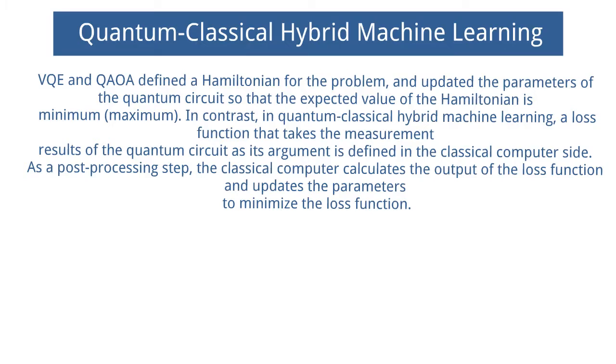VQE and QAOA defined a Hamiltonian for the problem and updated the parameters of the quantum circuit so that the expected value of the Hamiltonian is minimum or maximum. In contrast, in quantum-classical hybrid machine learning, a loss function that takes the measurement results of the quantum circuit as its argument is defined in the classical computer side.